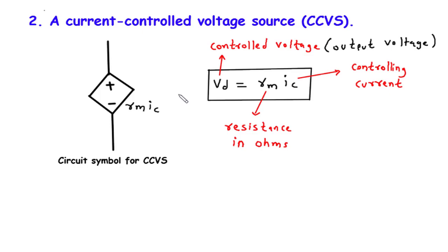Now, let's focus on the relationship between the controlling current, IC, and the voltage across the CCVS, VD. According to the CCVS equation, this relationship can be expressed as VD equals RM into IC.